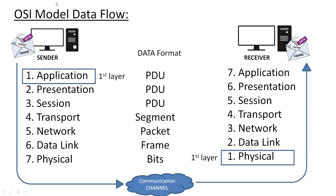Now, how does data flow work in the OSI model? If I want to forward data from one PC to another, the data will be generated from the Application layer. The Application layer forwards data to the Presentation layer, where encryption, decryption, and compression are done. After that, the Session layer opens and terminates the session. On the Transport layer, segmentation is done and port numbers are added.